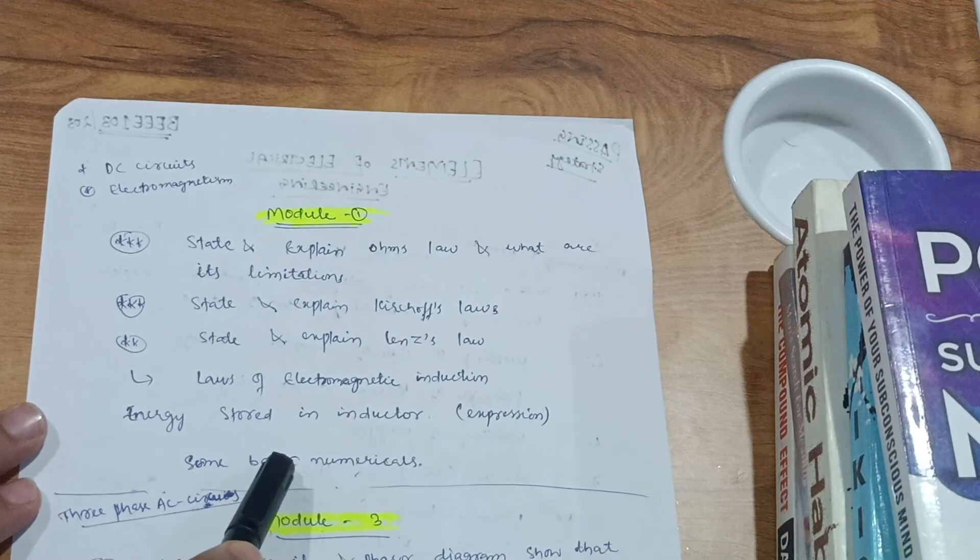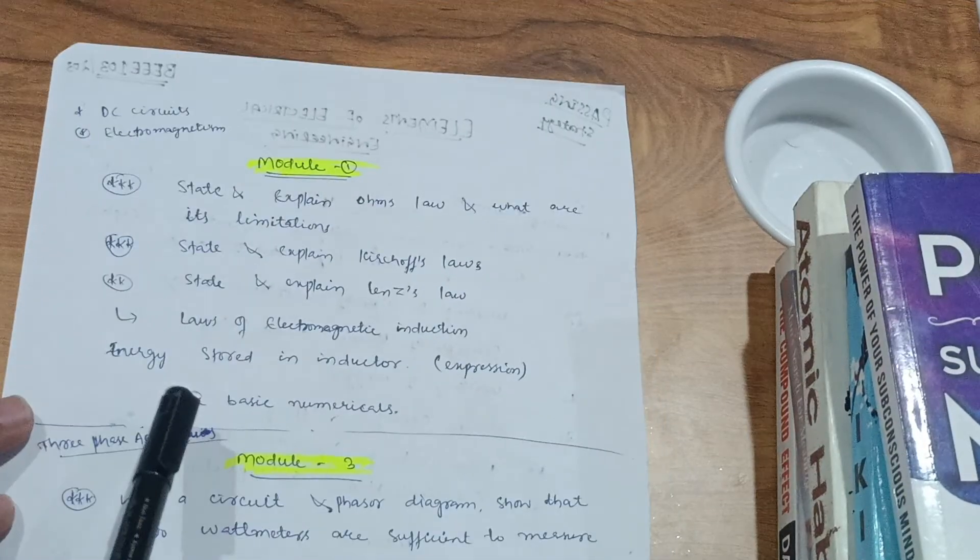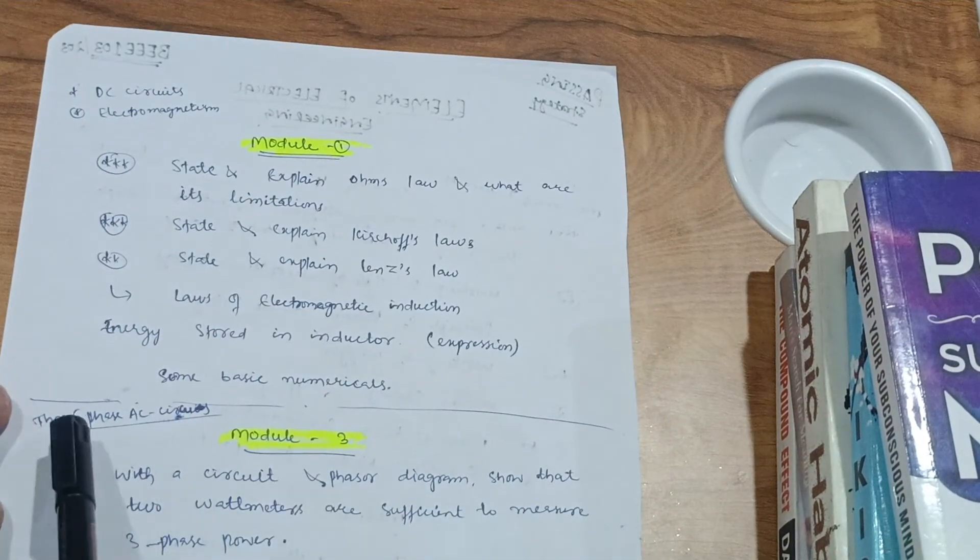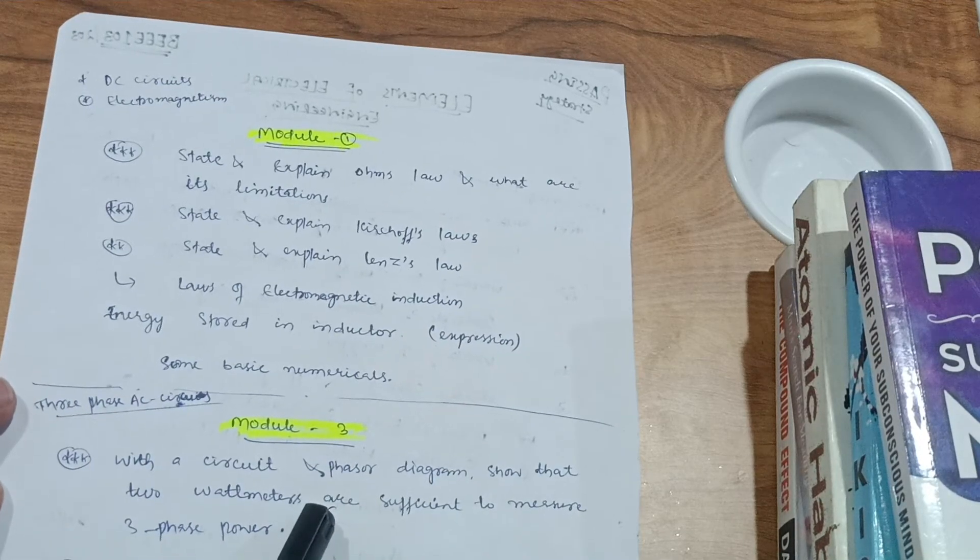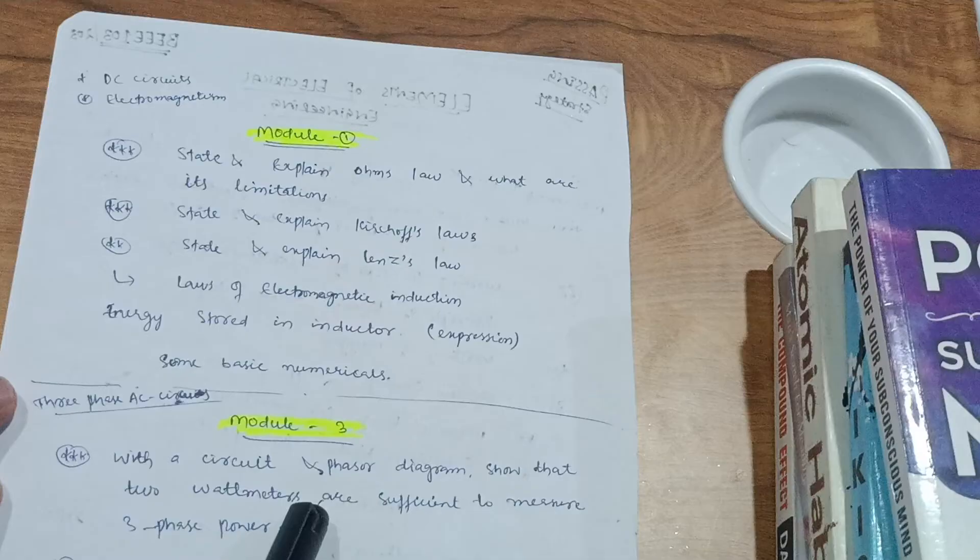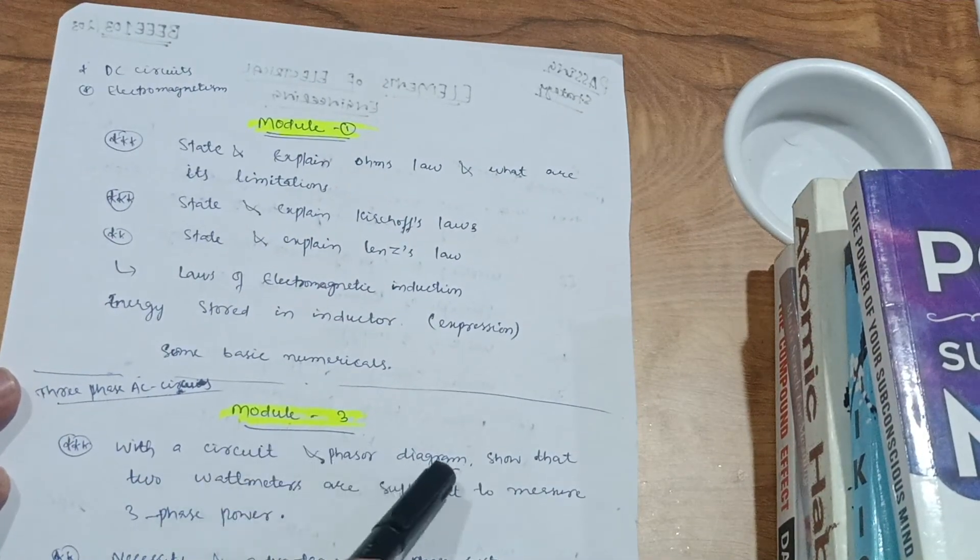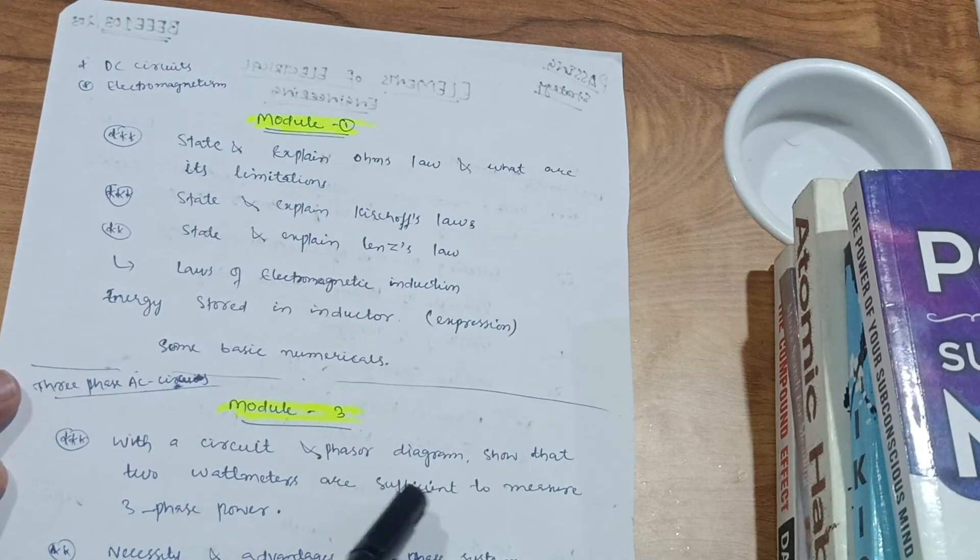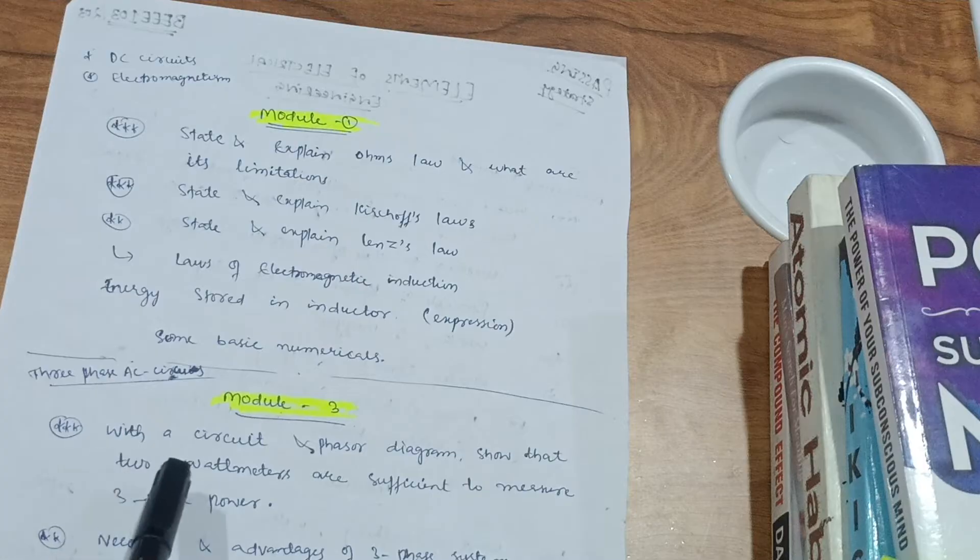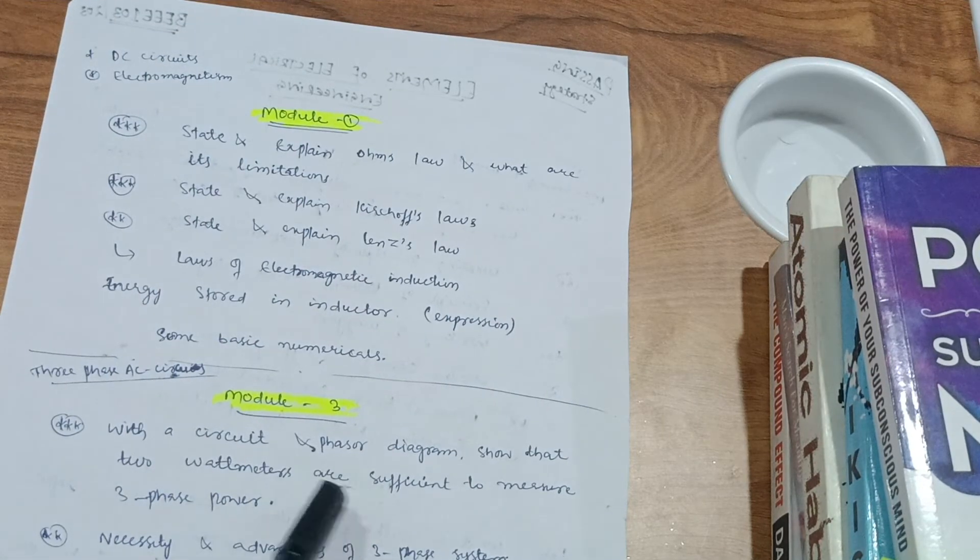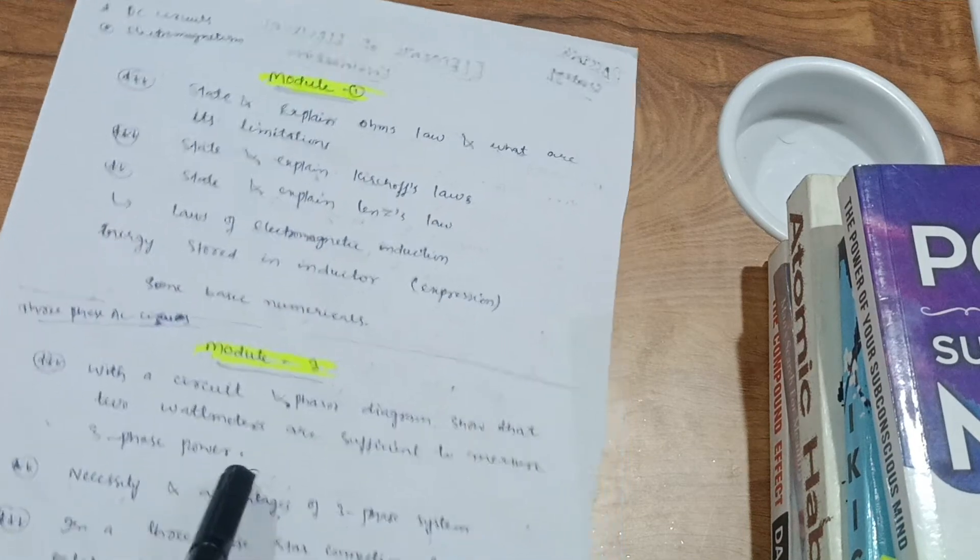In this particular module you will easily get 20 marks. Next one comes up, Module 3, three-phase AC circuits. This is a little bit tough module I can see, but you have to focus on some theory concepts also. With a circuit and phasor diagram, show that two wattmeters are sufficient to measure three-phase power. This is the most important question in this Module 3.